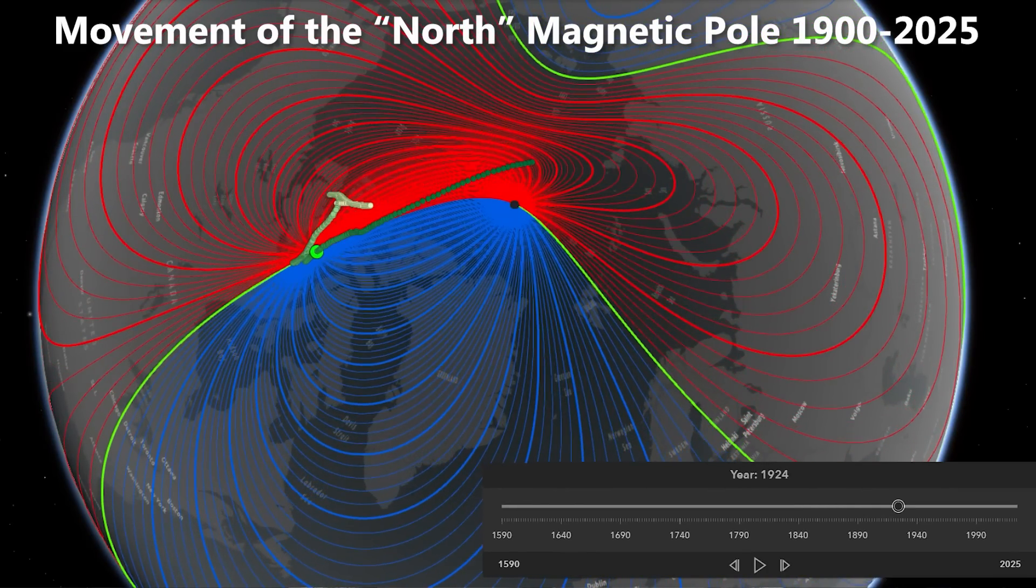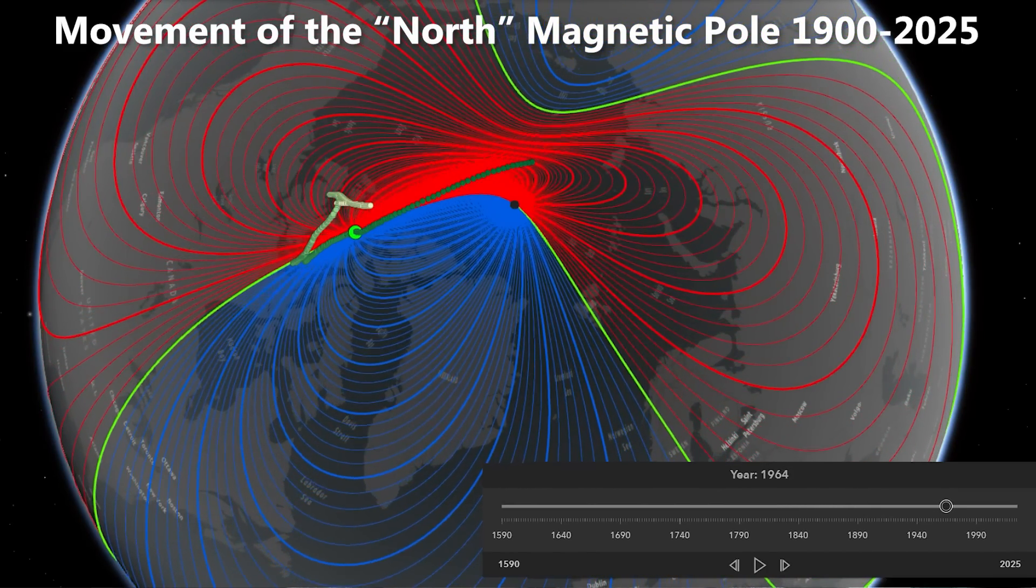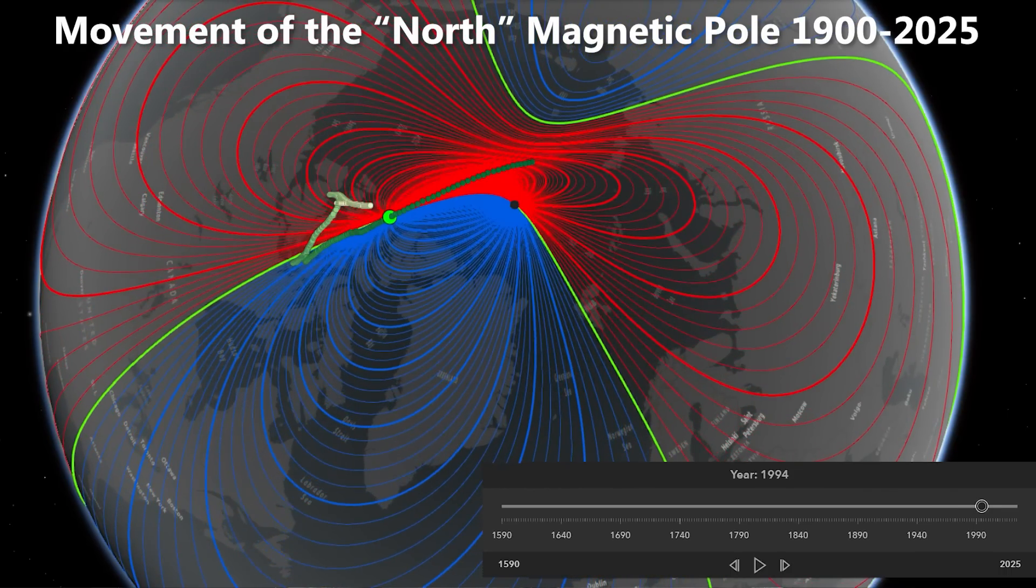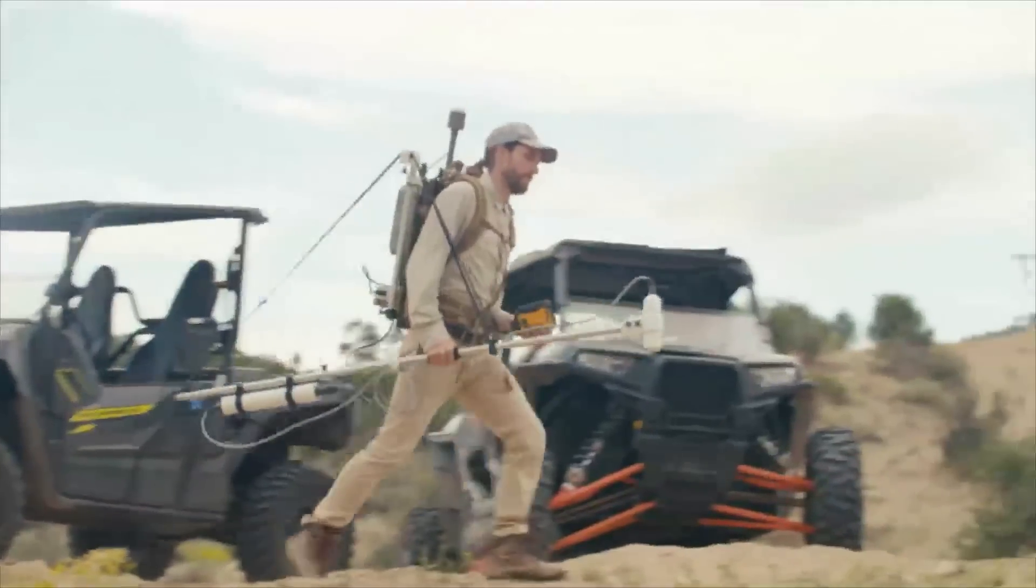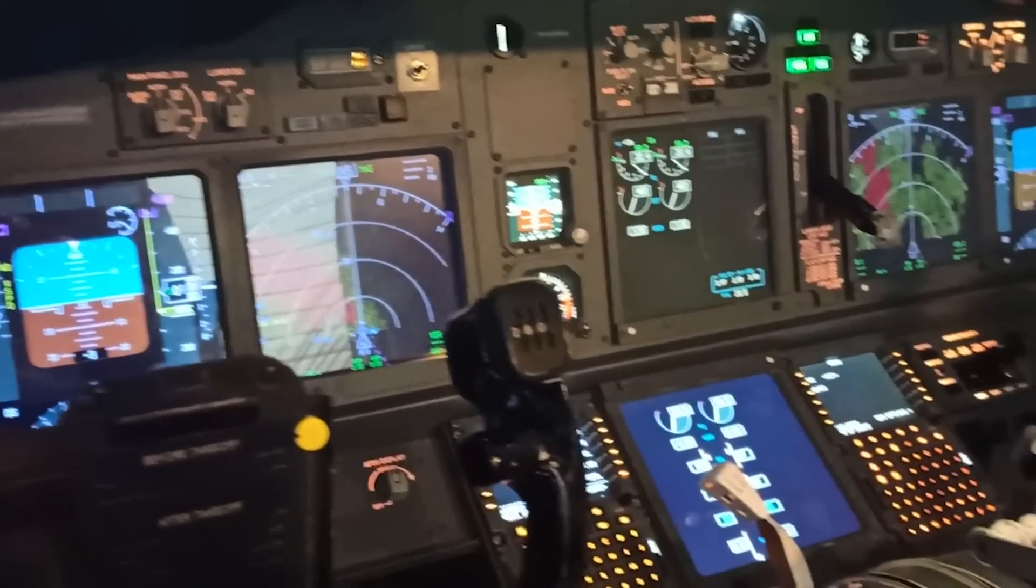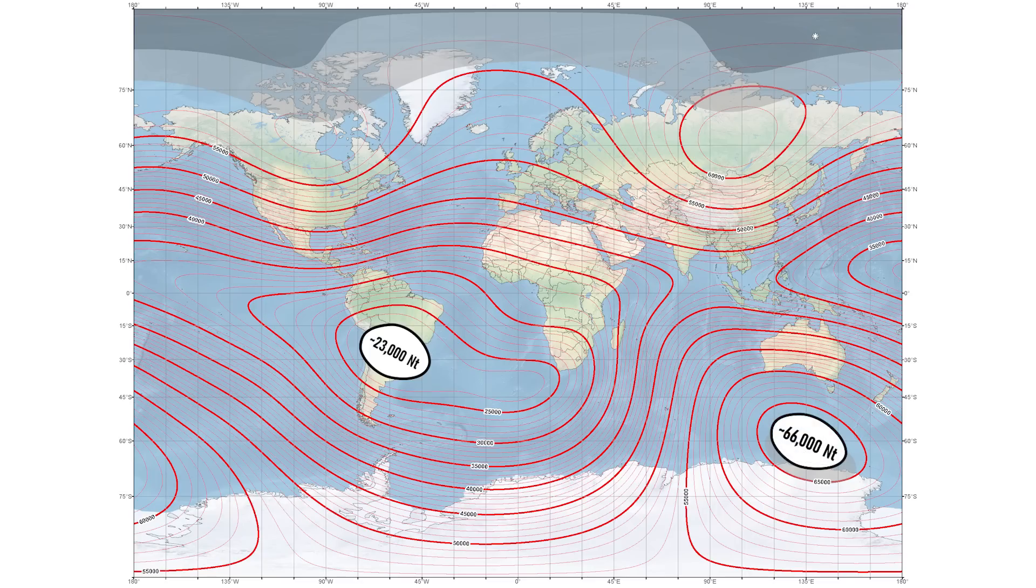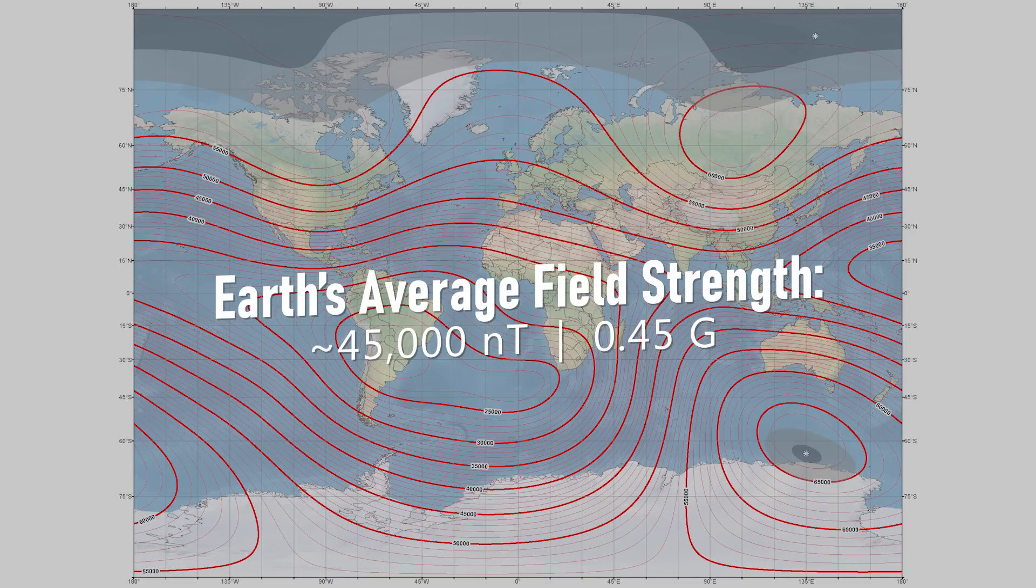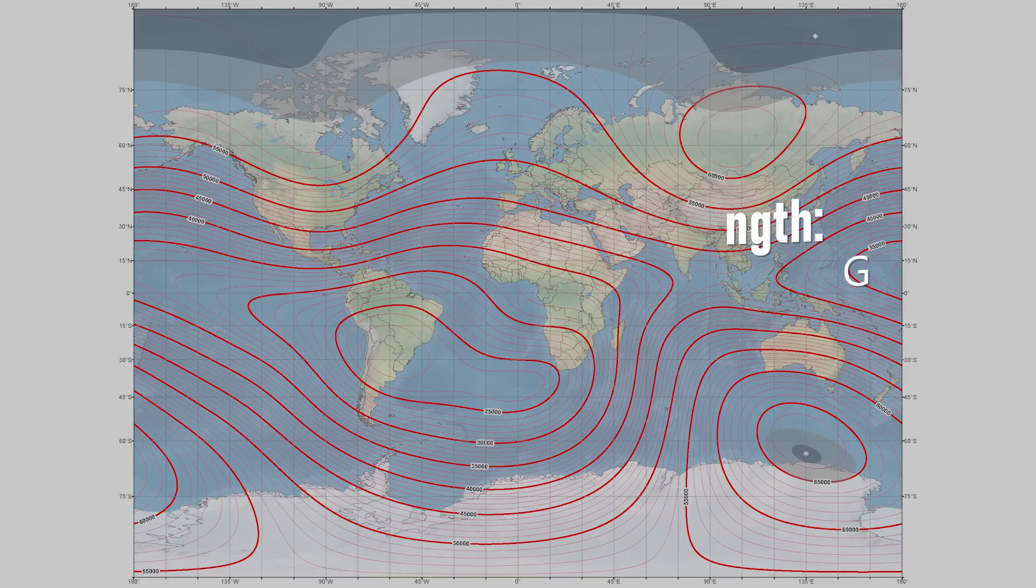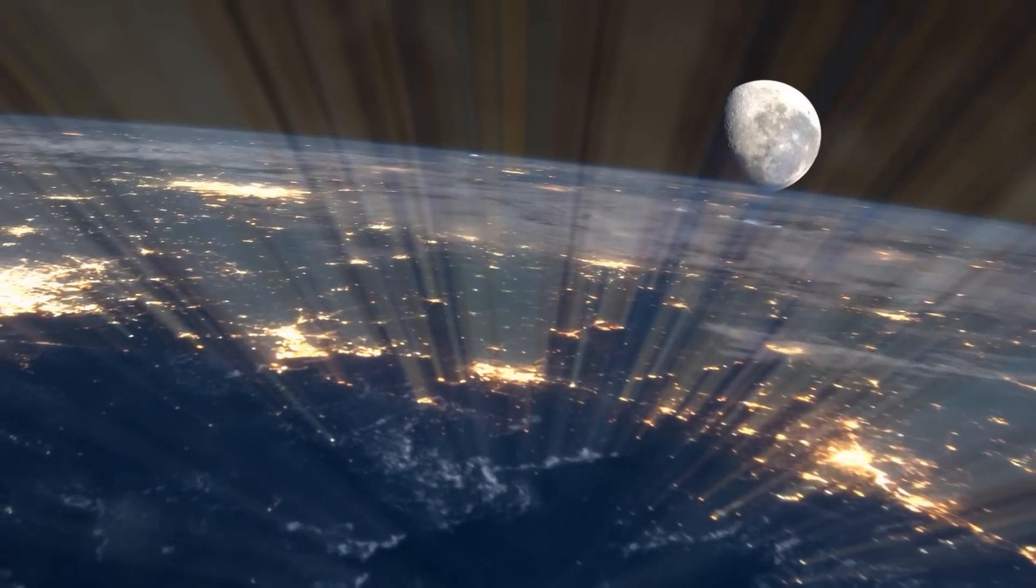As I'm filming this, the 2025 world magnetic model was just released about a month ago in December of 2024. And this is a model of Earth's magnetic field based on observational data that researchers have created for use across science, industry, and for navigational purposes. According to the 2025 world magnetic model, Earth's magnetic field strength ranges from a minimum of approximately 23,000 nanotesla in South America to a maximum of approximately 66,000 nanotesla very close to the magnetic pole in the Southern Hemisphere between Antarctica and Australia. This magnetic field strength range in Gauss would be 0.23 Gauss to 0.66 Gauss, and the average field strength is about 45,000 nanotesla or 0.45 Gauss. These are the most recent values in Earth's magnetic field strength at the surface of the planet.